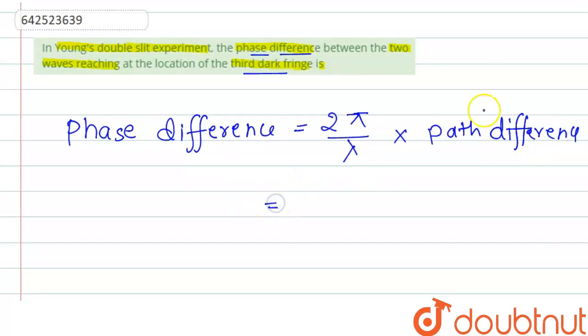And we can write the path difference as 2π/λ and the path difference is xn×d/D, where D is the distance of the slit from the screen and d is the distance between the slits.